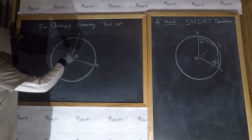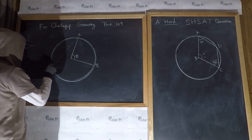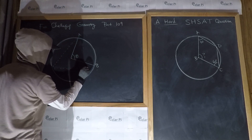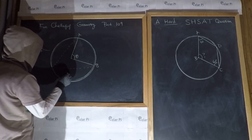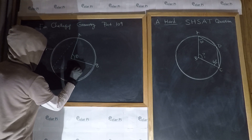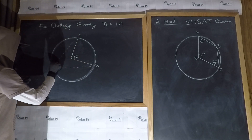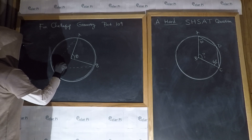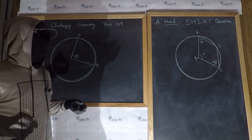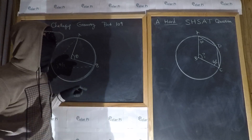And then we have what's called the Inscribed Angle Theorem, which tells us that this angle right here is theta over 2. But here, that's not the way to go.